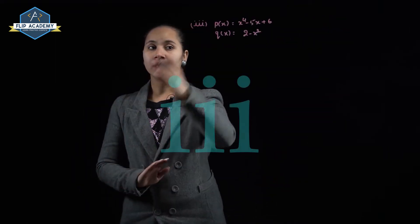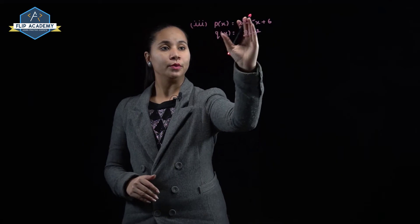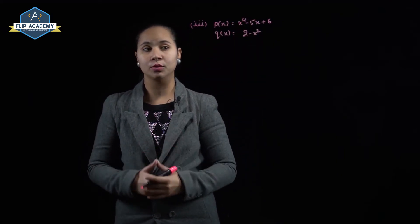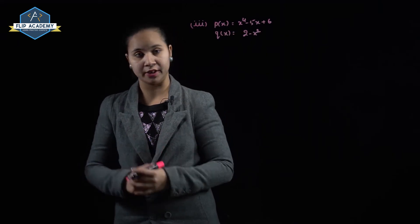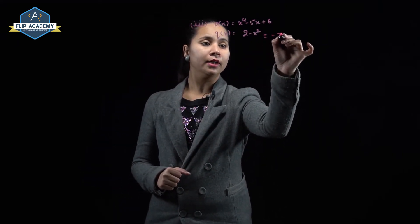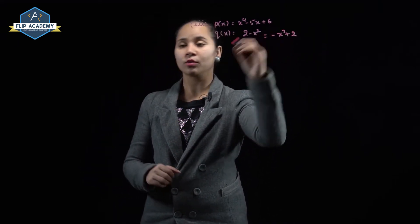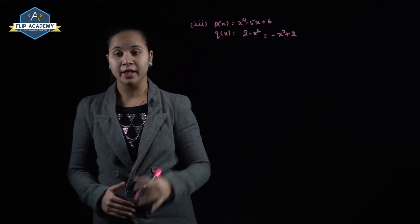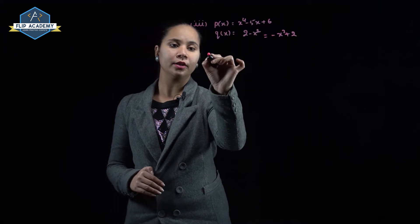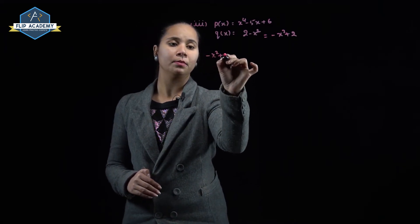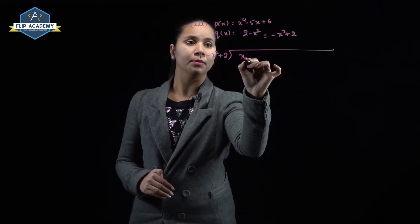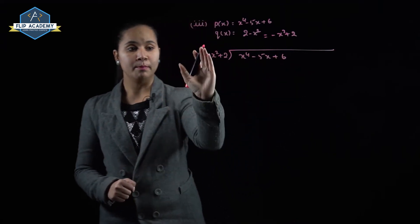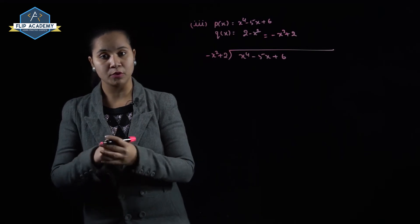Third part: p(x) = x⁴ - 5x + 6 and g(x) = 2 - x². We rearrange g(x) in descending order as -x² + 2, or equivalently use x² - 2. Now we divide into x⁴ - 5x + 6.